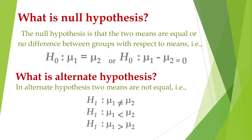What is the null hypothesis? The null hypothesis is that the two means are equal — no difference between the groups with respect to the means. So for the null hypothesis, mu1 is equal to mu2, or there is no difference between mu1 and mu2.